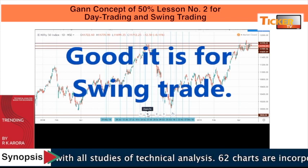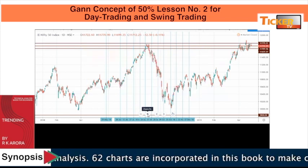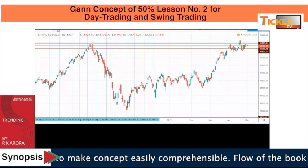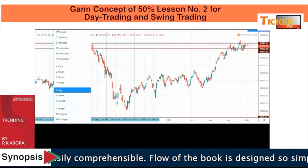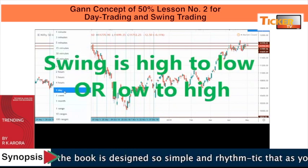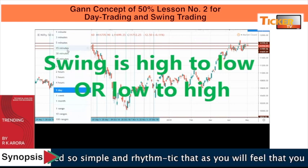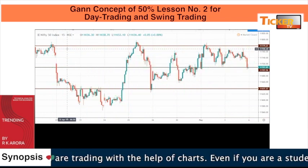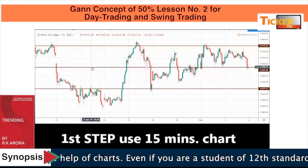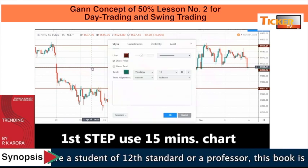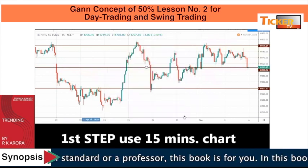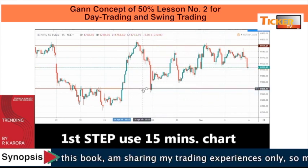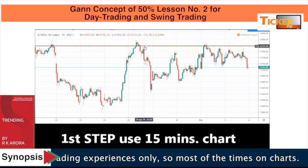A swing can last one day, three days, five days, seven days — till the move is completed, from up to down and down to up, from low to high, high to low. Now, if we have to look for day trading, first we will change our chart time frame from a day to 15 minutes. We'll take the high and low of 15 minutes, then we will be able to calculate in a good manner.